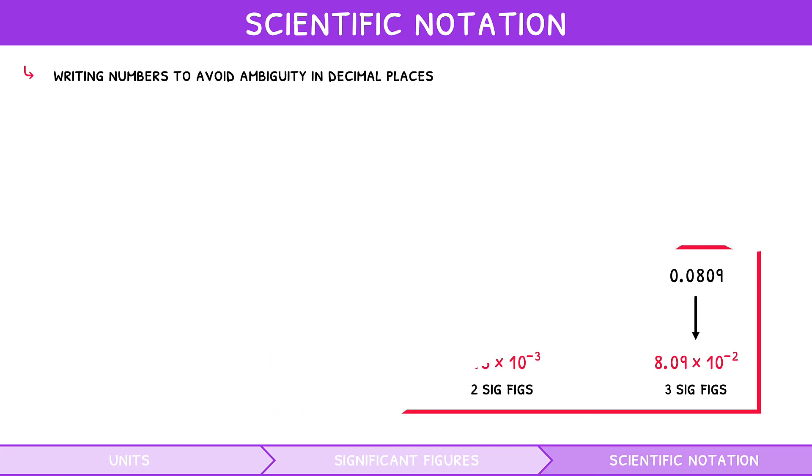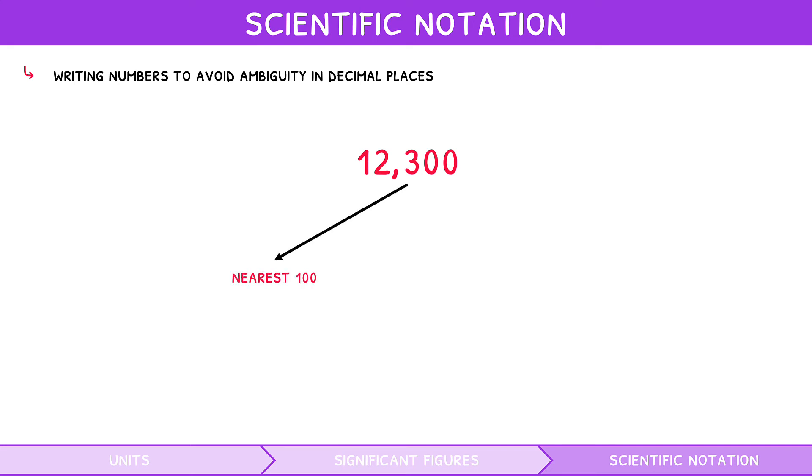So, let's review the number 12,300. If it had been rounded to the nearest 100, we would express it as 1.23 times 10 to the 4, i.e., 3 sig figs. To the nearest 10, we would express it as 1.230 times 10 to the 4, i.e., 4 sig figs. And to the nearest 1, we would express it as 1.2300 times 10 to the 4, i.e., 5 sig figs.